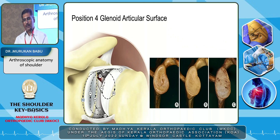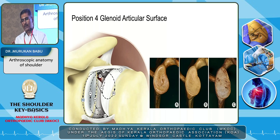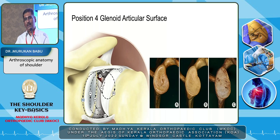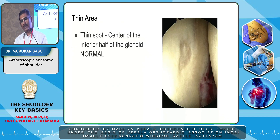Next, the fourth position. From the third position you go again upward, seeing the glenoid part. Normally the glenoid articular surface is covered by very good cartilage. There are some anatomical variations: one is a thin area at the center — a thin spot at the center of the inferior half of the glenoid — that is normal only.